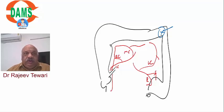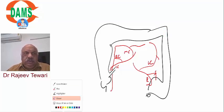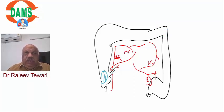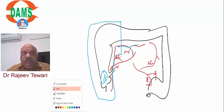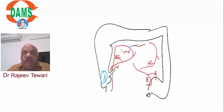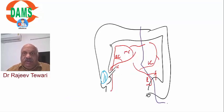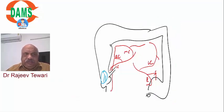In right hemicolectomy for cancer in the ascending colon, we take about 2-3 inches (5-7 cm) of terminal ileum, and cut through the right branch of the middle colic. For left hemicolectomy, we go through the left branch of the middle colic up to mid-sigmoid. For right extended hemicolectomy, we do the right hemicolectomy but also need to go to the left branch of the middle colic.